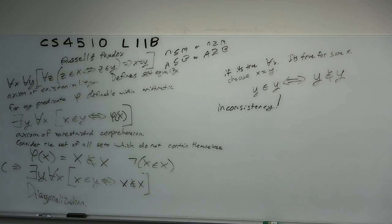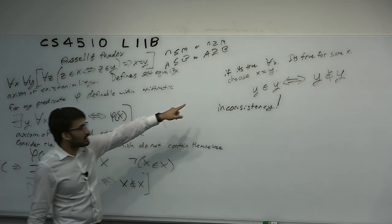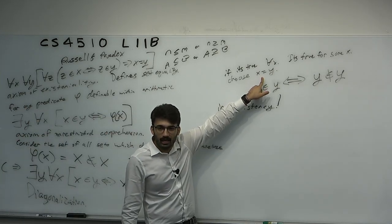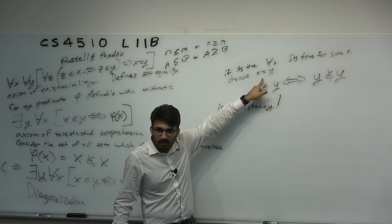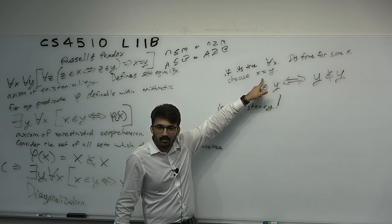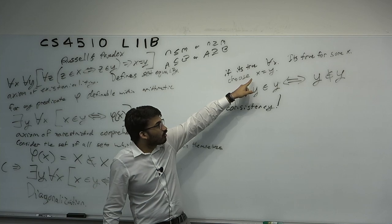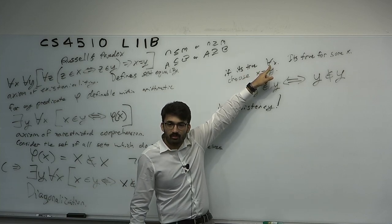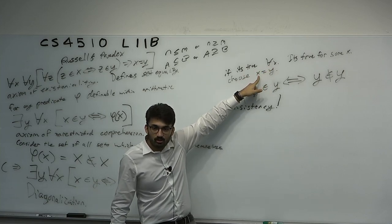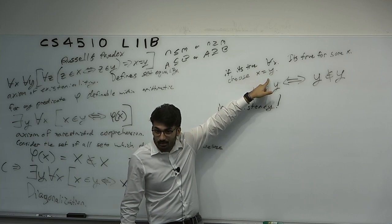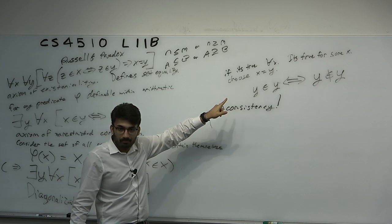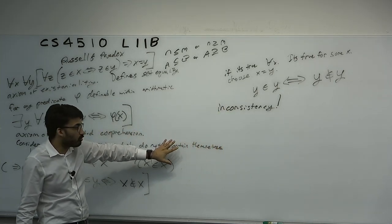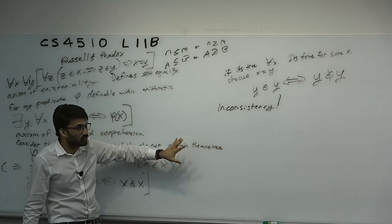When we chose x equals y, we went from 'for all x' to 'there exists an x — specifically the one that's y.' That is us looking at the diagonal of this table. So this is nothing more than a proof by diagonalization over a different kind of object.